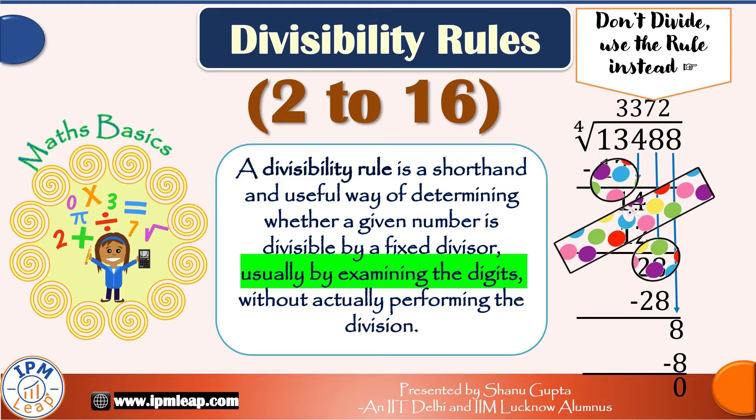A divisibility rule is a way to skip the actual division process. Using a divisibility rule, we can quickly decide whether a given number is divisible by a fixed divisor by just examining the digits of the given number. In this video we will study the divisibility rules for numbers from 2 to 16. So let's begin.